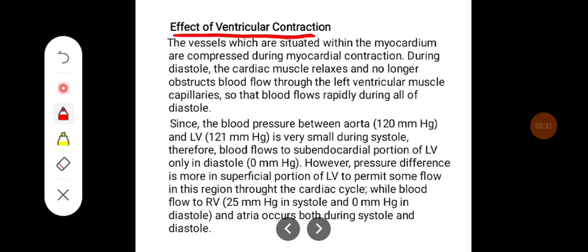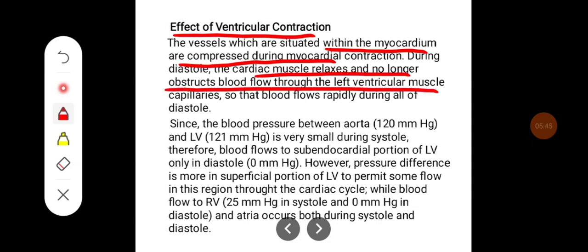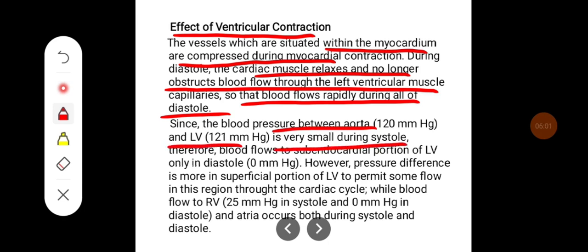The effect of ventricular contraction: vessels situated within the myocardium are compressed during myocardial contraction. During diastole, the cardiac muscle relaxes and no longer obstructs blood flow through the left ventricular muscle capillaries, so blood flows rapidly throughout diastole. Since the pressure difference between the aorta and left ventricle is very small during systole, blood flow to the sub-endocardial portion of the left ventricle occurs only in diastole.